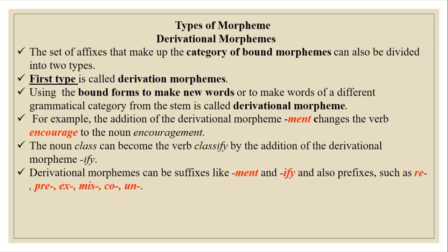Now we are going to discuss the categories of bound morphemes. In this category we have derivational morphemes as the first category. The set of affixes that make up the category of bound morphemes can be divided into two types. The first type is derivational morphemes: using bound morphemes or bound forms to make new words or to make words of a different grammatical category from the stem is called a derivational morpheme.